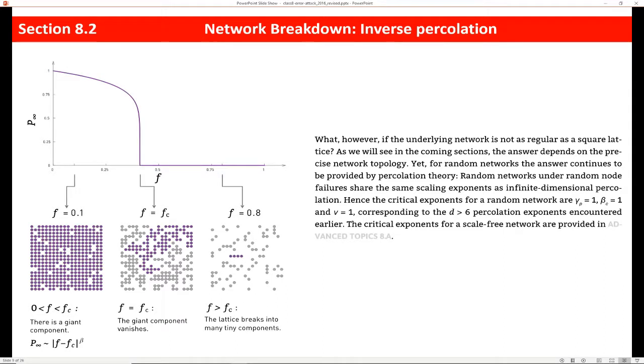And so the important thing that I want you to take away here is that if we have this kind of topology, so we either have a square lattice or a random network, we're going to have this result where we keep removing nodes from the network and we're removing those nodes at random. These are just random failures that eventually the giant component that we have will disappear.